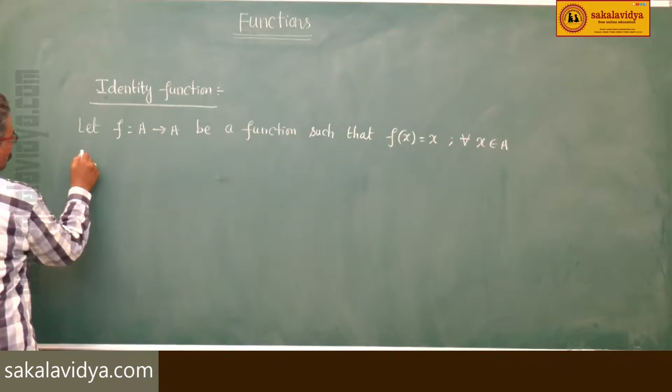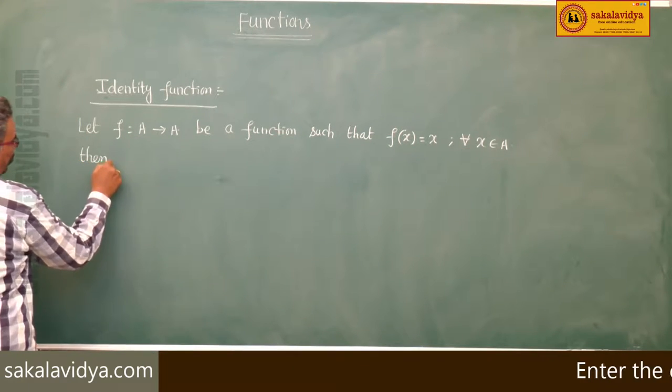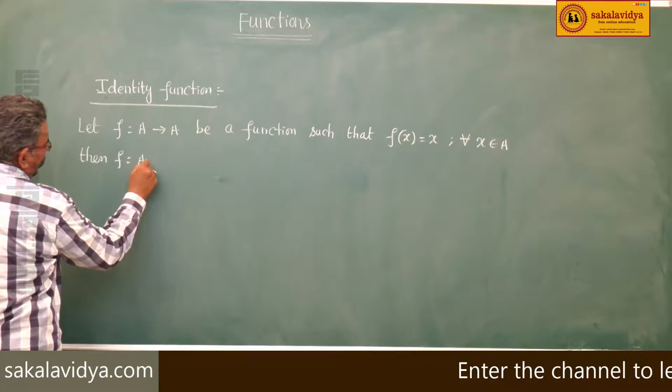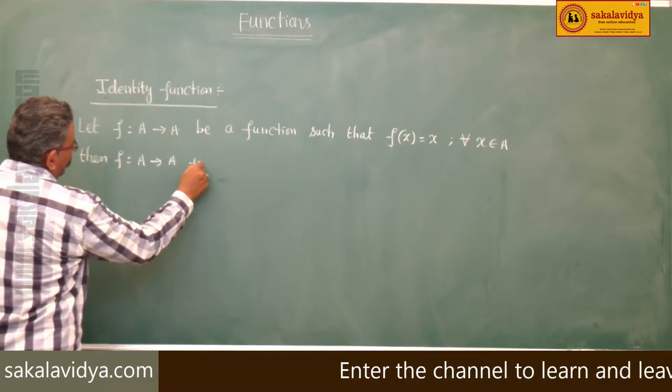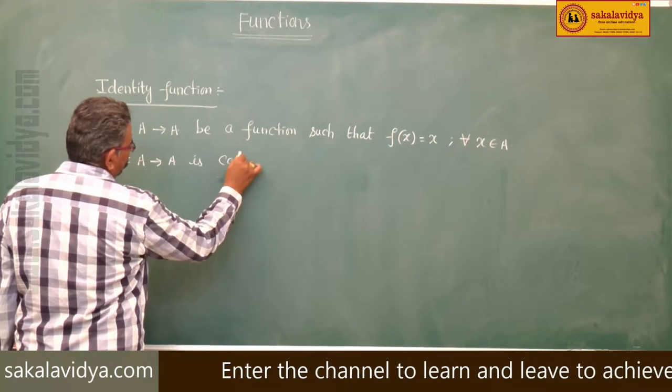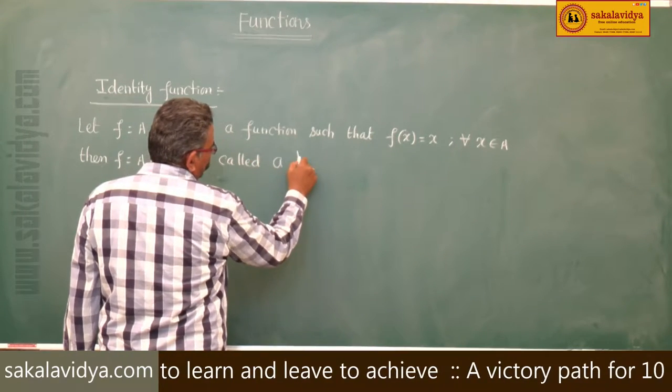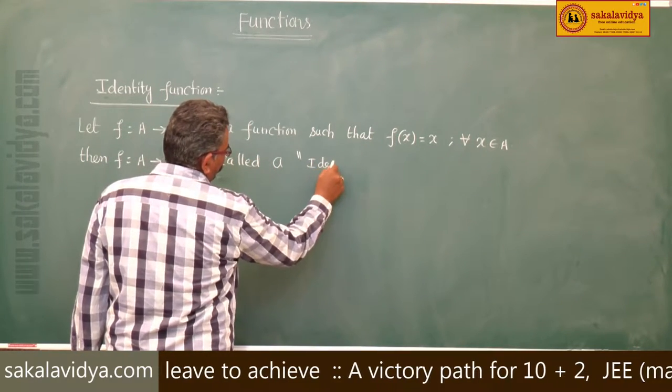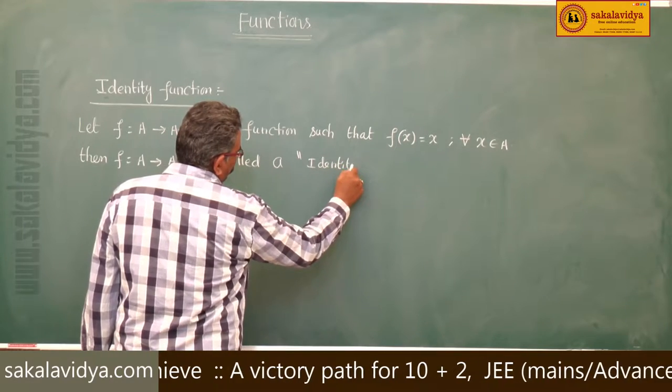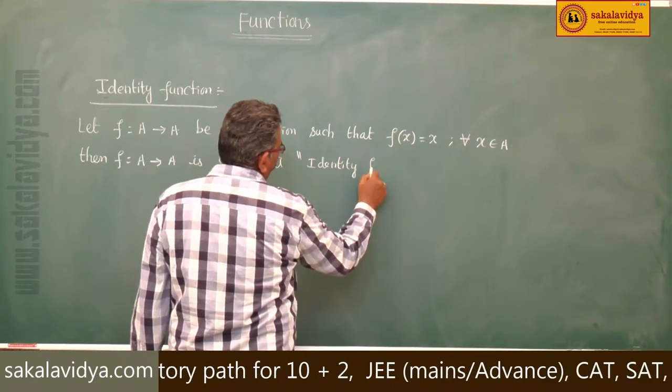Then f: A → A is called an identity function. Already we have discussed constant; this is identity, identity function.